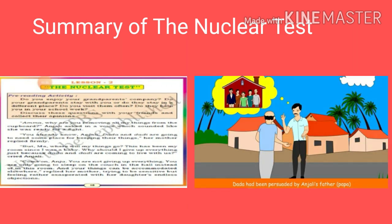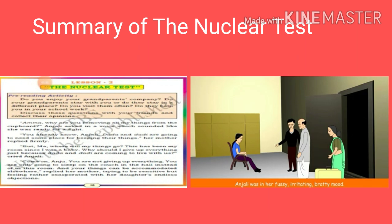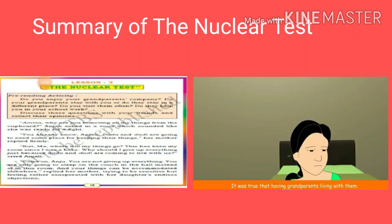Anjali's father is very keen, very interested to have a joint family. He wanted all the time that his parents should stay with them. So he has persuaded and motivated his parents to come from the village and stay with them. Now Dada Dadi came to stay with Anjali's family. Anjali, being a little selfish and nurtured alone, is not feeling happy, but she is not showing or giving any rude comment — she is trying to be polite.